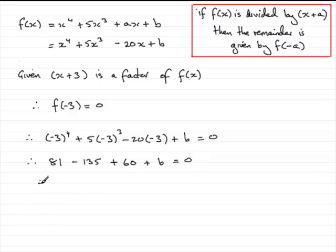Therefore, if we tidy the left-hand side up, you should find that you get 6 plus b equals 0. If we subtract 6 from both sides, you end up with b equaling minus 6. That is the end of this question.